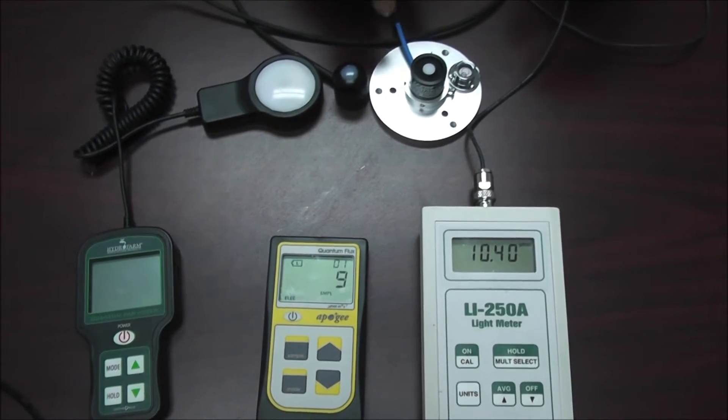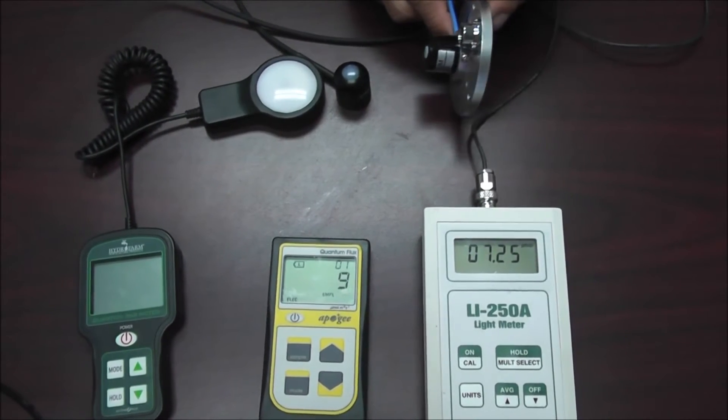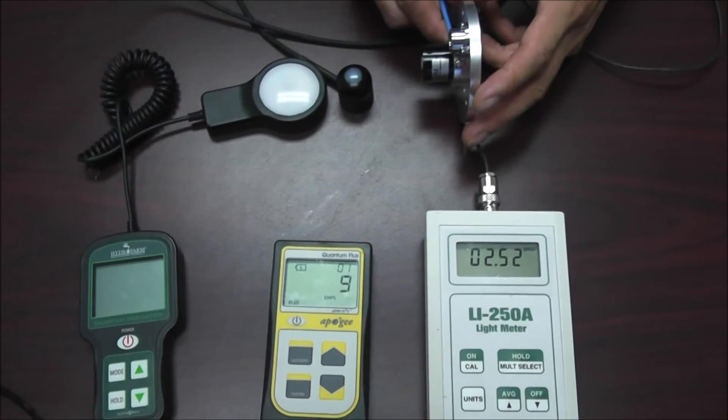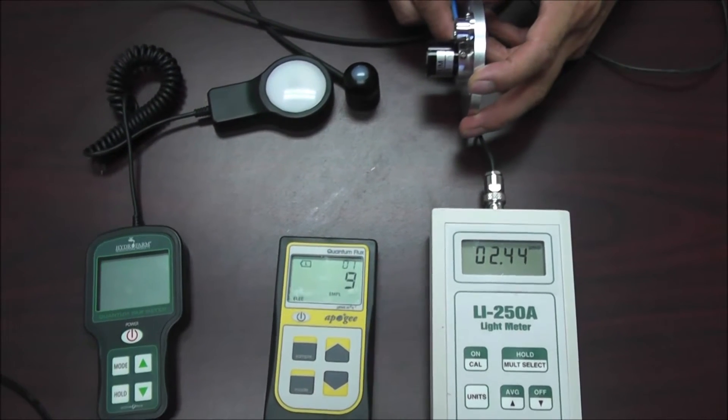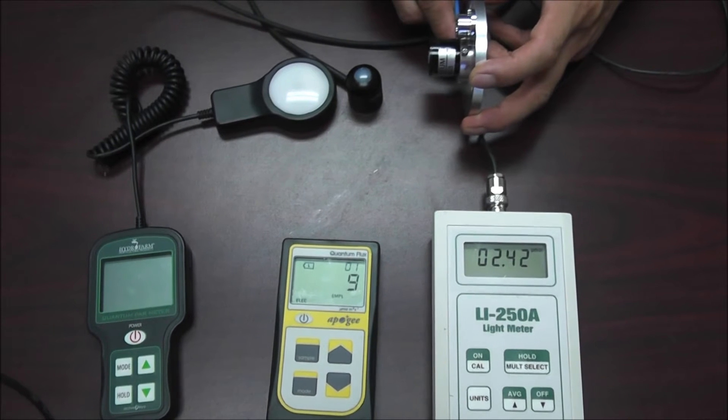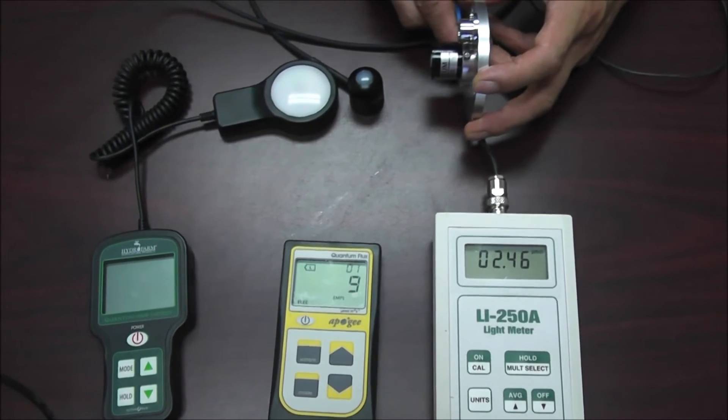If we turn this LiCOR sensor 90 degrees, we are trying to measure the light from horizontal direction. We got 2.4.